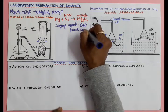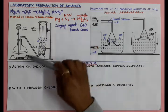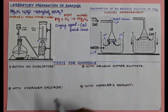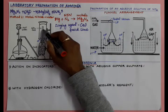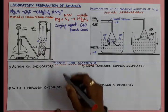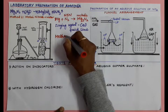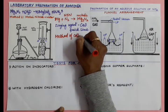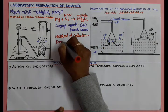After passing through the quicklime, ammonia becomes dry and is collected by downward displacement of air. The jar is empty, and as ammonia rises up — being lighter than air — it pushes air down and out of the jar. That is why the method of collection is called downward displacement of air.